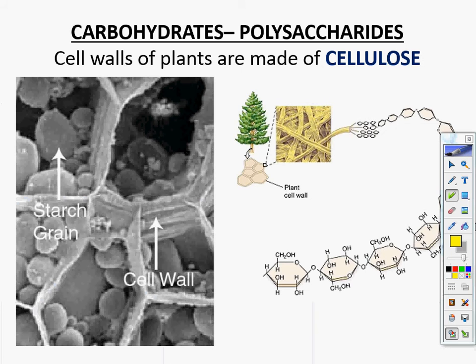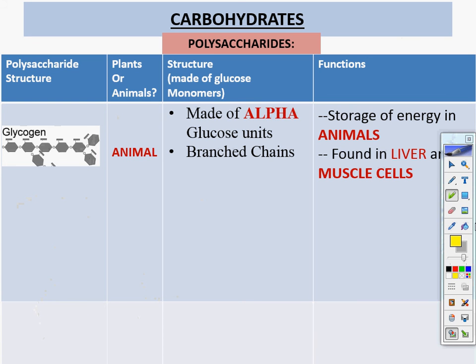Cell walls of plants are made of cellulose. We have a little starch granule and then our cell walls, which are made of cellulose.